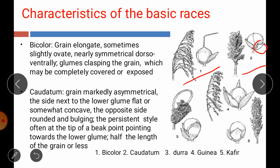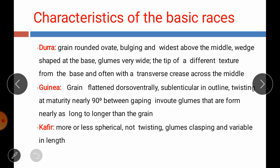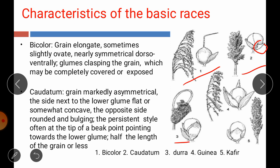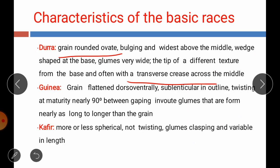Race dura has a round or ovate-shaped grain, bulging and widest above the middle, wedge-shaped at the base, with glumes very wide at the tip of different texture from the base, and often with a transverse crease. Race guinea grains are flat-shaped dorsoventrally, sublenticular in outline, twisting at maturity nearly 90 degrees, with glumes nearly as long to longer than the grain. Race kafir is more or less spherical in shape, not twisting, with glumes collapsing and variable in length.